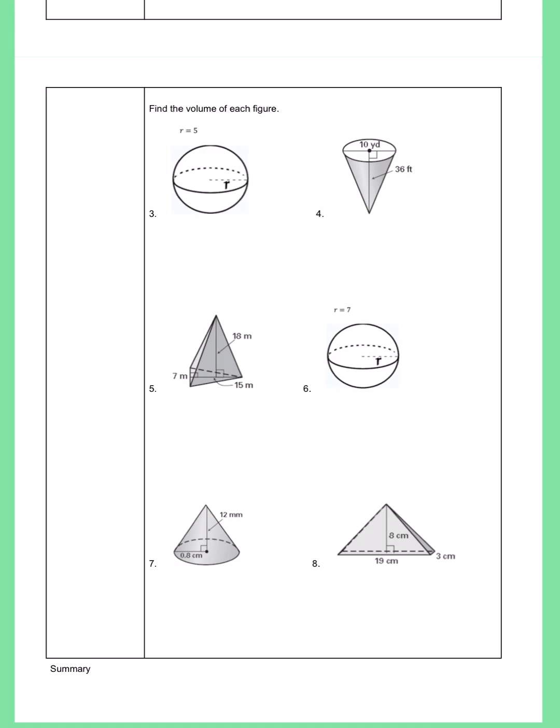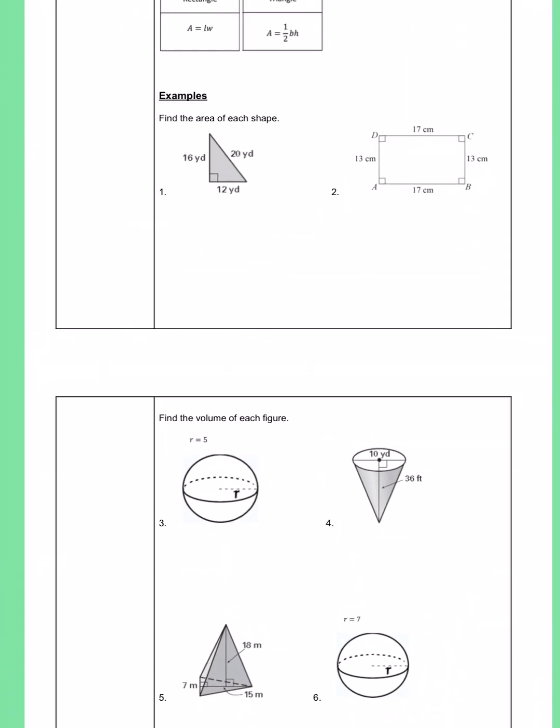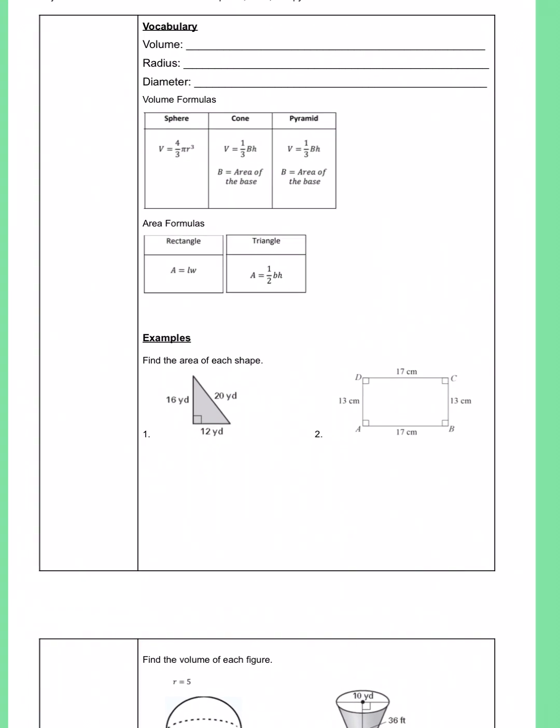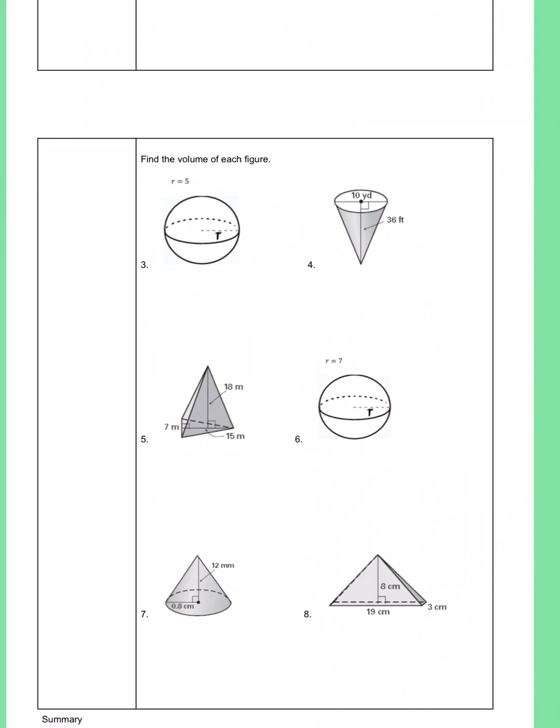We're going to continue with our notes from section 7.5 on volume and we're going to look at actually finding the volume of these three different shapes. Our first one is a sphere and we're going to look back at the formula for that. The volume is four thirds times pi, which we said we're going to use 3.14, times the radius to the third power.